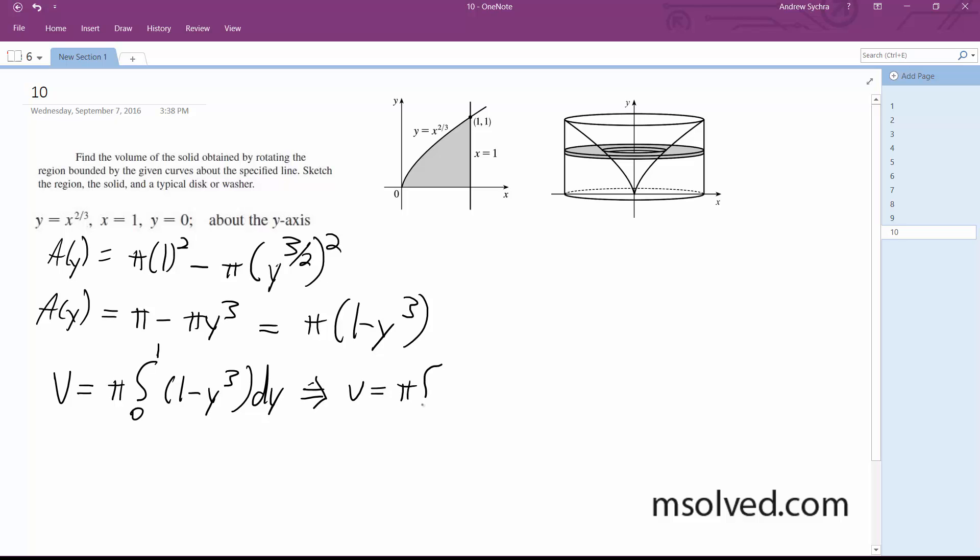All right, so when we do that we get V equals pi times y minus y to the fourth over 4, and then you get pi times 1 minus 1/4, and the volume finally is equal to 3/4 pi. That's it.